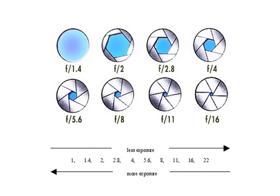Essentially, those are just a measure of the size of the aperture opening. This diagram shows the relation between F-stop and aperture opening. As you can see, as you go from F2.8 to F4 to F5.6, the aperture opening is getting smaller.